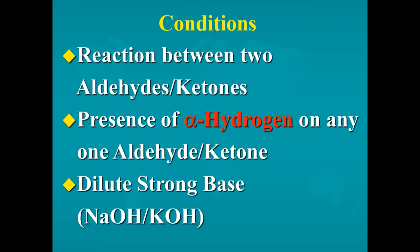Aldol condensation is a reaction between 2 aldehydes or 2 ketones. The condition is that one aldehyde or ketone must have an alpha hydrogen — that is, the hydrogen on the carbon adjacent to the functional group. Additionally, a dilute strong base is required, either NaOH or KOH. It means only those aldehydes and ketones give aldol condensation which have at least one alpha hydrogen.